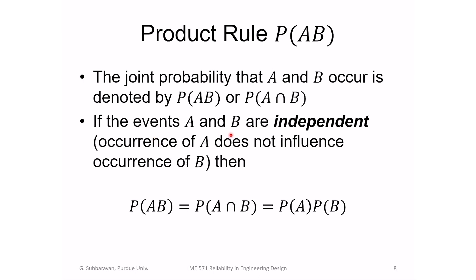If the events are independent — meaning the occurrence of A does not influence the occurrence of B — for instance, A corresponds to obtaining a tail in the first of two coin tosses, and B is obtaining a tail in the second coin toss. Those two are independent events, because one coin toss does not influence the other. So P(A ∩ B) equals P(A) times P(B) if the two events are independent.